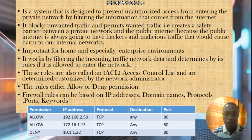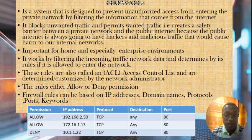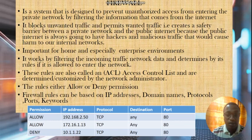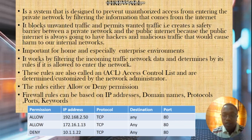Here is an example of an access control list where we are denying traffic to one machine which is 10.1.1.22 on port 80 — so that device cannot access web services under this access control list. The other two devices, 192.168.2.50 and 172.16.1.13, are allowed access. This is the basic structure of an access control list, and it's what you'll find when you log into your firewall to configure which devices can access your network.